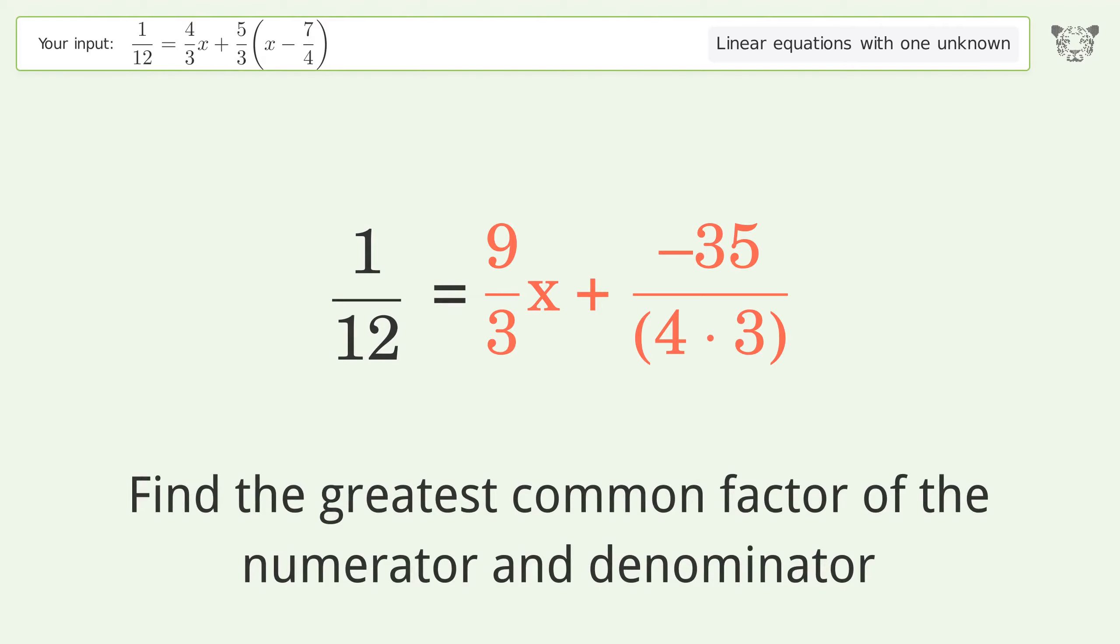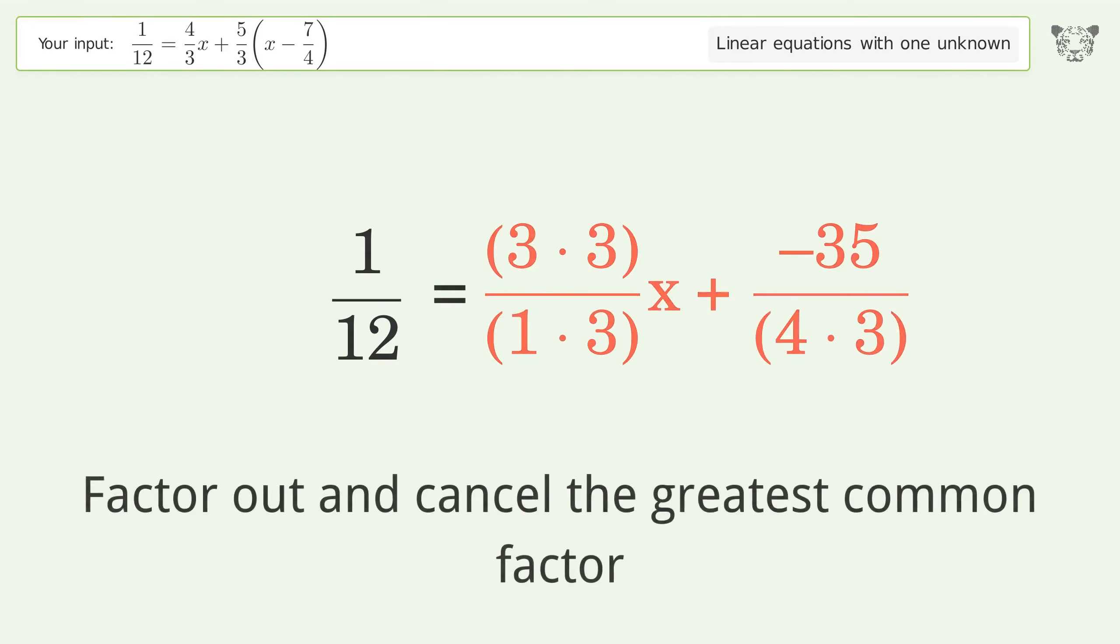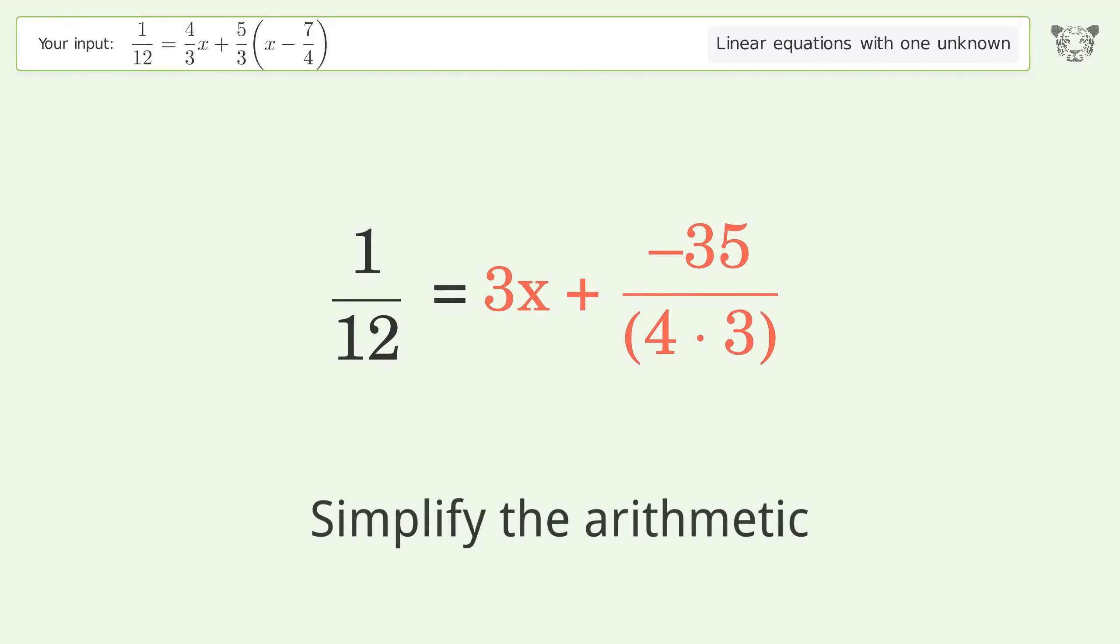Find the greatest common factor of the numerator and denominator. Factor out and cancel the greatest common factor. Simplify the arithmetic.